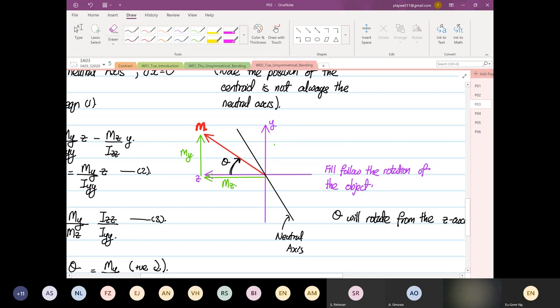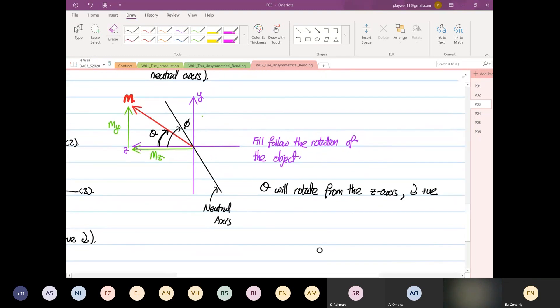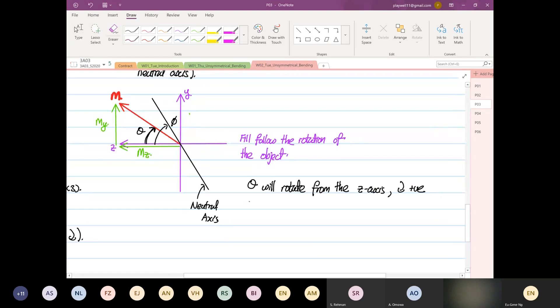And the neutral axis, the frame of reference again is from Z. And this I'm going to call pi. Again, I will elaborate pi is the orientation.